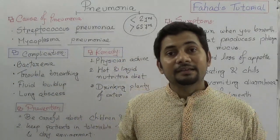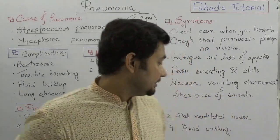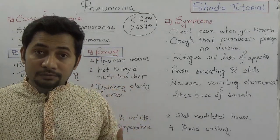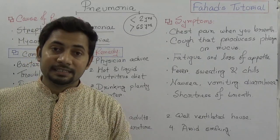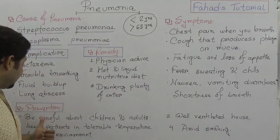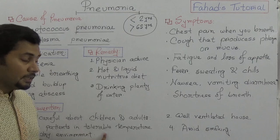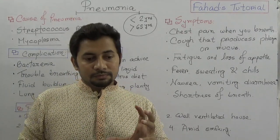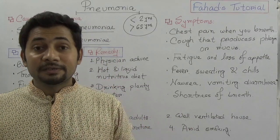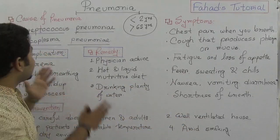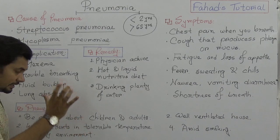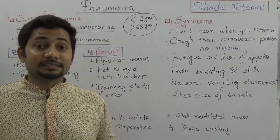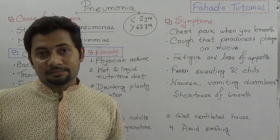For prevention: please be careful about the kids and older people in your family — it is really important. If possible, depending on socioeconomic status, the house or living place should be well ventilated. In case of patients, keep them in a tolerable, dry, and warm environment — not cold. Pneumonia can be caused by the common cold, bronchitis, or measles, so patients should be kept in a dry, warm, and well-ventilated environment.